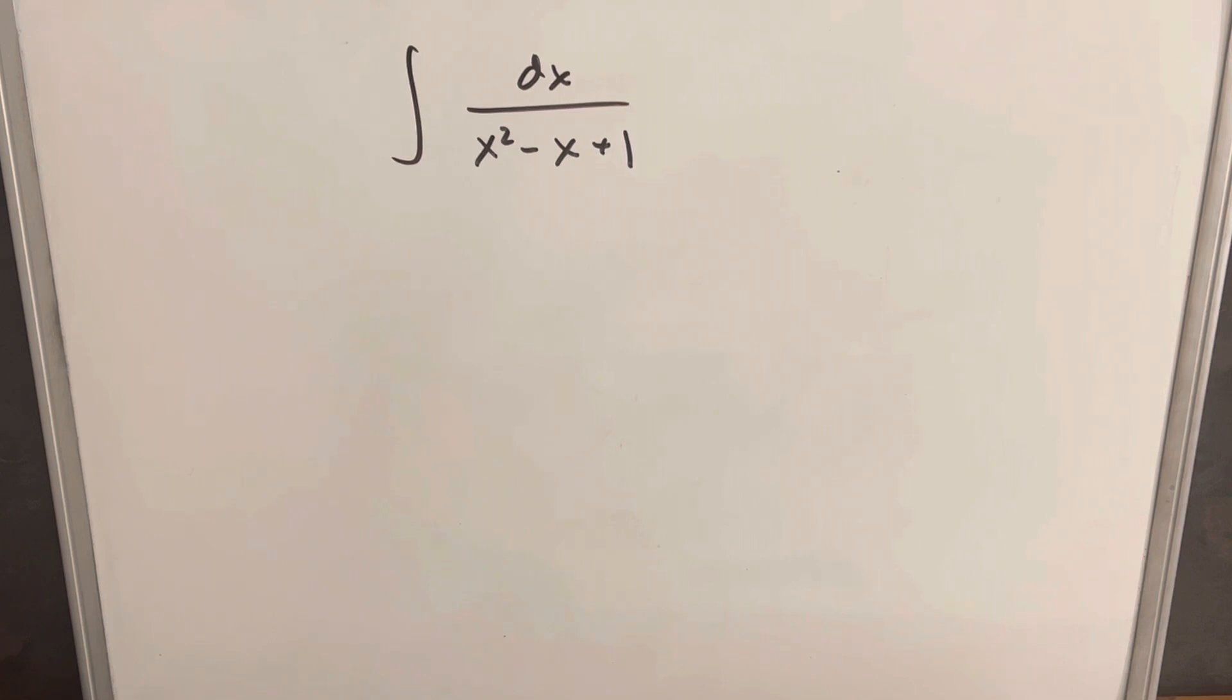We don't really have anything in the numerator to work with to do a u substitution. And if we were going to do a trig substitution, usually we want just two terms in the denominator. We'd like something like x squared plus 1 or x squared plus just a number. But what we can do is create that kind of situation in the denominator by completing the square.